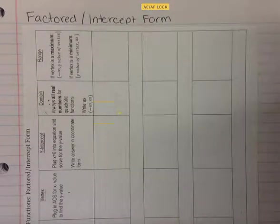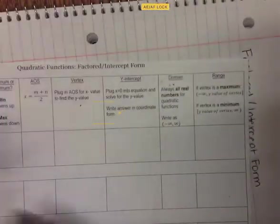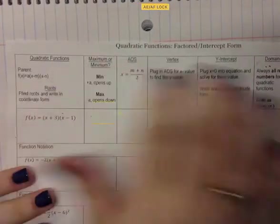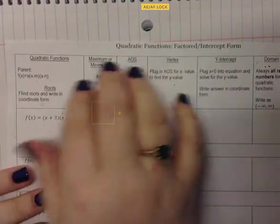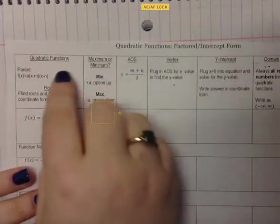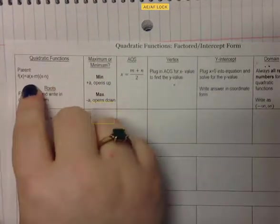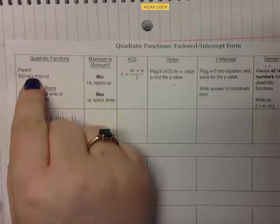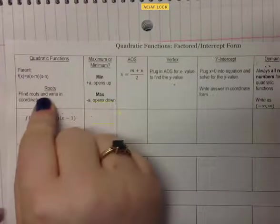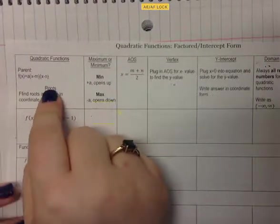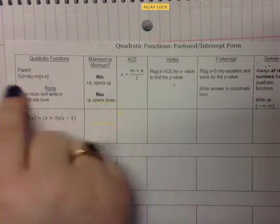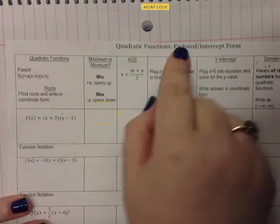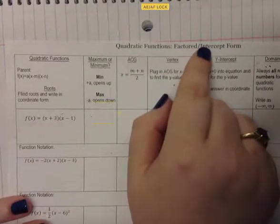This video is on factored/intercept form. We're going to be dealing with quadratic functions. The parent function for factored/intercept form is f(x) = a(x - m)(x - n). This gives us our roots, which are the same thing as our x-intercepts, solutions, and zeros. So factored/intercept form is a factored form, and it will give us our x-intercepts.